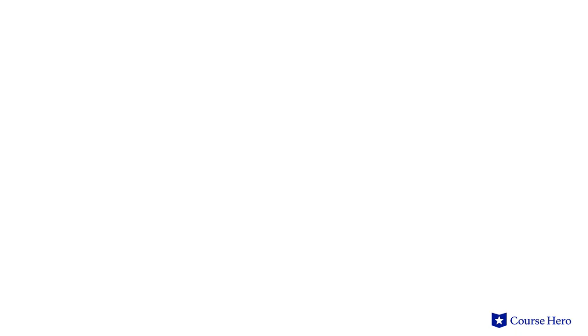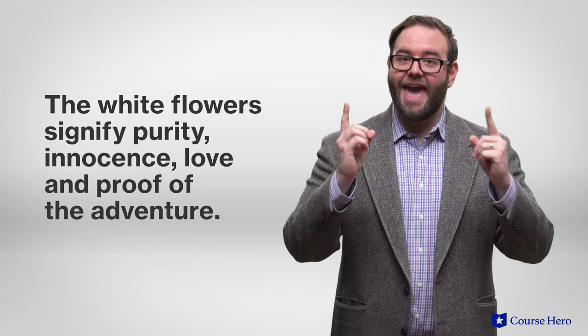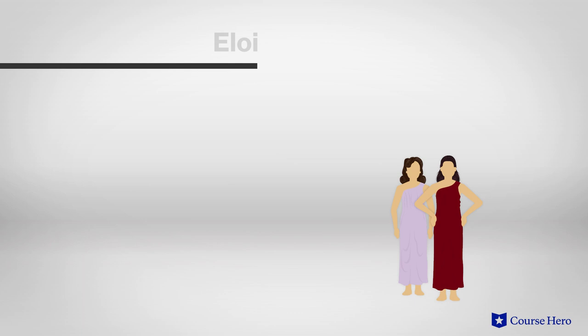Eloi and Morlocks are also symbols. The Eloi represent the elitism of the rich who bask in their wealth and do not work to contribute to civilization. Beautiful and graceful, they're unintelligent and lazy.